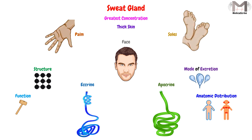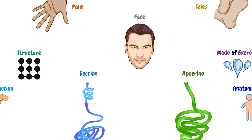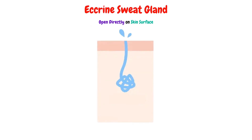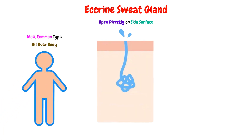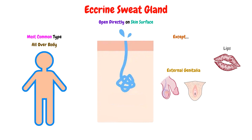Now we will take a general look at these types, because in the upcoming videos we will dive into the details. Regarding the eccrine sweat glands, they open directly on the skin surface, and they are the most common type, distributed all over the body except the lips and external genitalia.